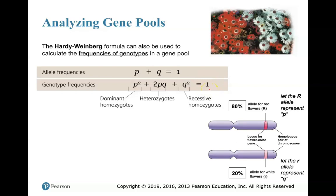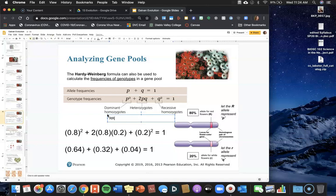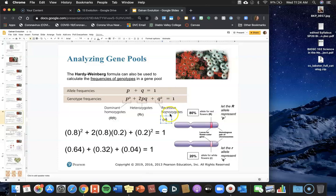P was the dominant allele, so p-squared in the Hardy-Weinberg formula represents individuals who are homozygous dominant — uppercase R, uppercase R. The 2pq term represents heterozygotes — uppercase R, lowercase r. And q-squared represents recessive homozygotes — lowercase r, lowercase r.